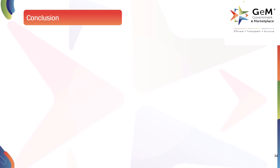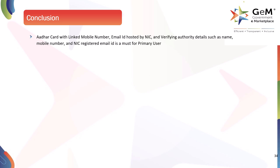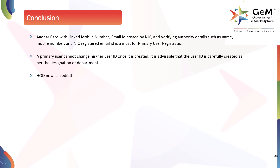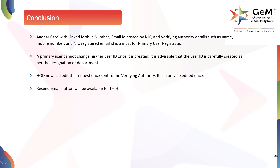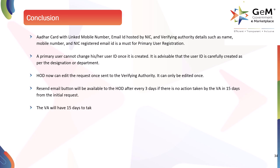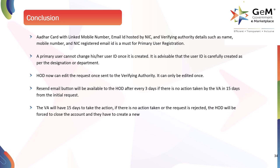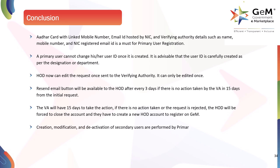Here are the key takeaways of this module. An Aadhaar card with linked mobile number, email ID hosted by NIC, and verifying authority details such as name, mobile number, and NIC registered email ID are required for primary user registration. A primary user cannot change their user ID once it is created — it is advisable to create the user ID carefully as per designation or department. The HOD can edit the request once sent to the verifying authority, but only once. The Resend Email button will be available to the HOD after every 3 days if no action is taken by the VA within 15 days. If no action is taken or the request is rejected, the HOD must close the account and create a new HOD account to register on GeM.